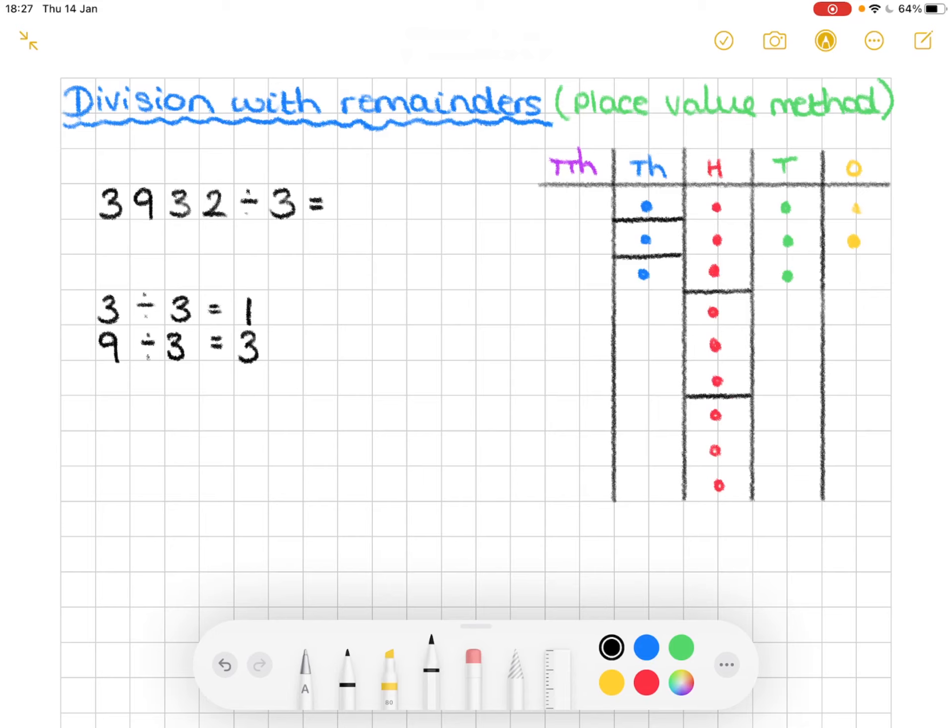Next is the tens column. And we have three in our tens column. Again, we've done this. So three divided by three makes one. There is one in each group.